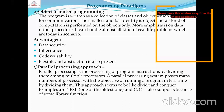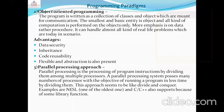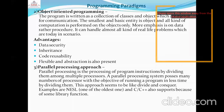The last one under Imperative is Parallel Processing. Parallel processing is the processing of program instructions by dividing them among multiple processors. A parallel processing system uses many processors with the objective of running a program in less time. If we want to run more than one process, we can assign different processors.